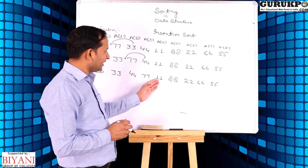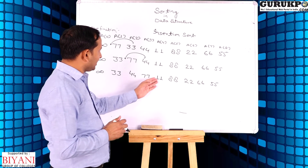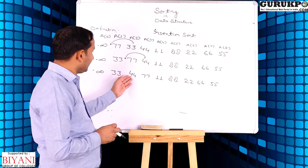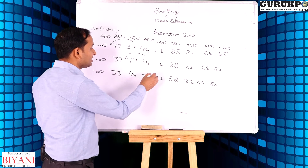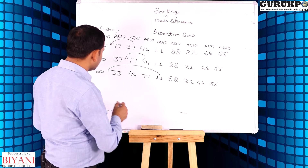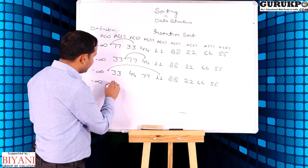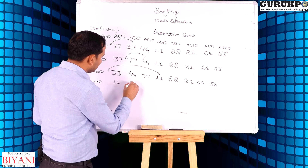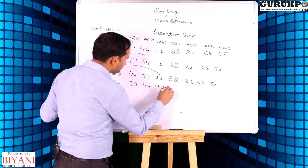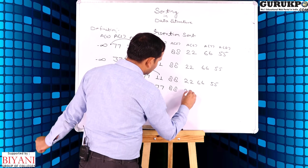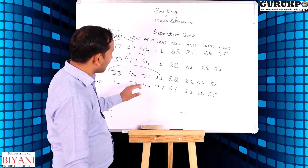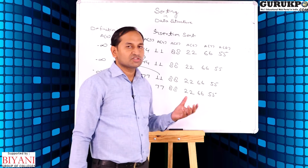Now we take the fourth element, that is 11. We compare 11 to 77 — it is smaller. We compare to 44 — smaller. We compare to 33 — smaller. But 11 is greater than minus infinity, so the exact location of 11 is the first position, before 33. Now we can observe the first four elements, 11, 33, 44, 77, are in sorted form.